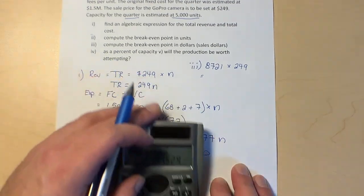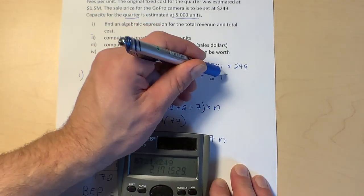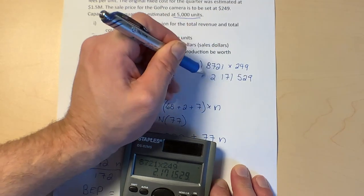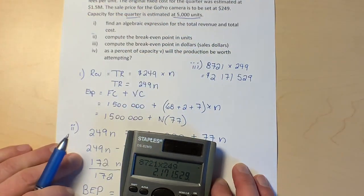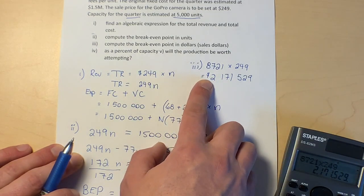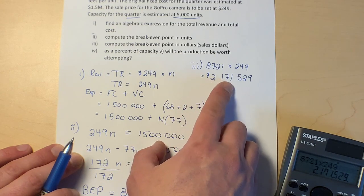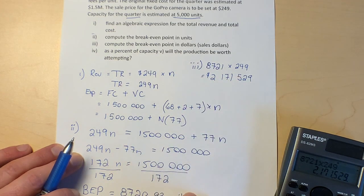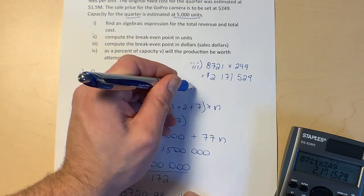171,529 dollars, so $2,171,529 in order to break even. And for part number four, as a percent of capacity.